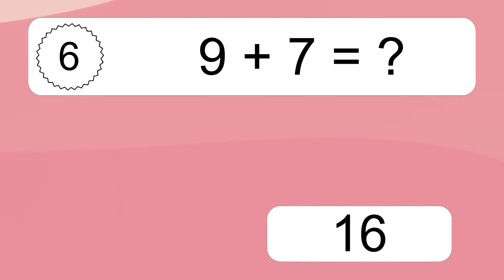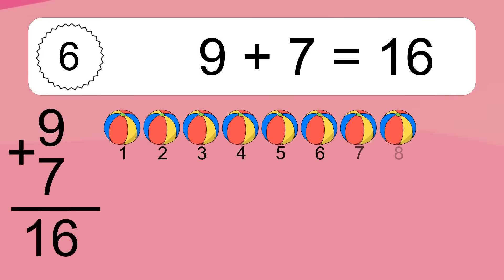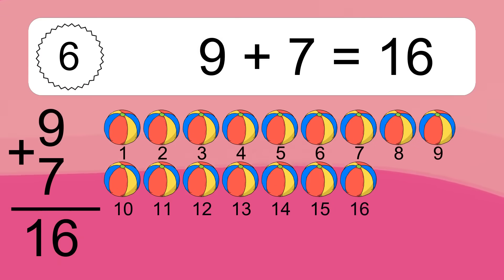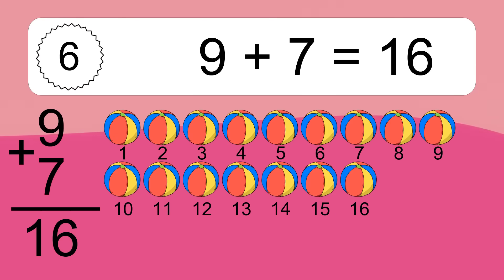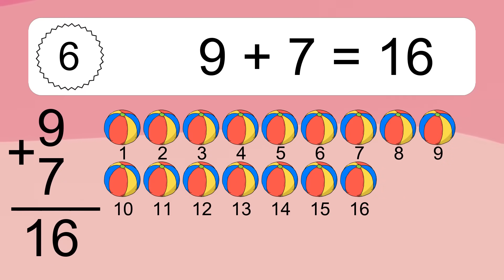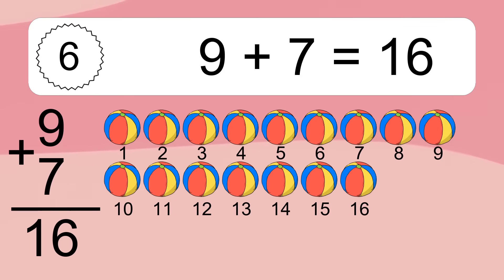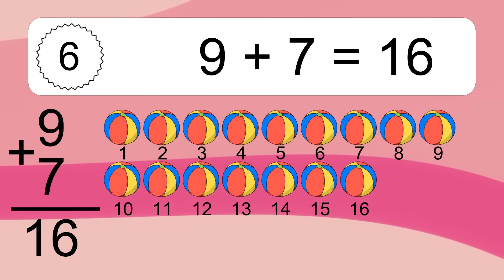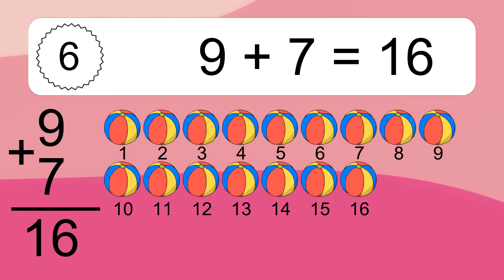9 plus 7 equals what? 9 plus 7 equals 16. Let's count it: 1, 2, 3, 4, 5, 6, 7, 8, 9, 10, 11, 12, 13, 14, 15, 16.